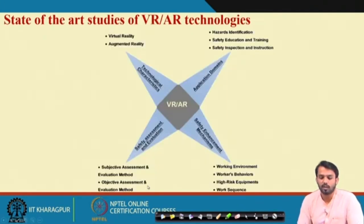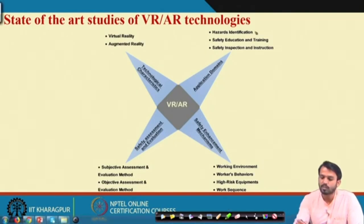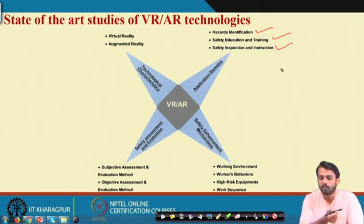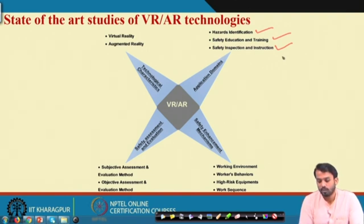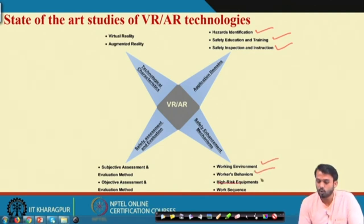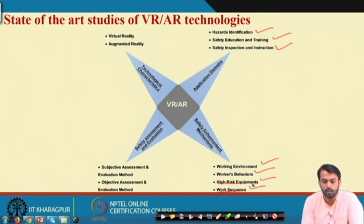What is the state of the art for studies using VR and AR techniques? The technological characteristics cover both virtual reality and augmented reality, and the application domains are focused on: hazard identification, safety education and training, and safety inspection and instruction. VR and AR are also applied to many domains like mining training, healthcare training, and firefighting training. Safety enhancement mechanisms can be incorporated for: the working environment, workers' behavior, high-risk equipment simulation, and work sequence and work plan. The created virtual world can also be evaluated with respect to safety, using subjective assessment methods and objective assessment and evaluation methods.